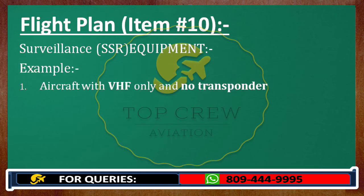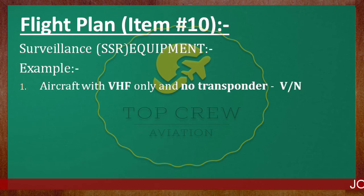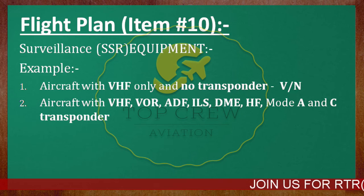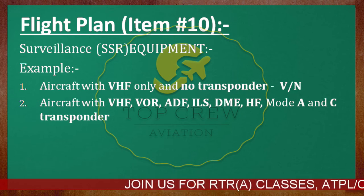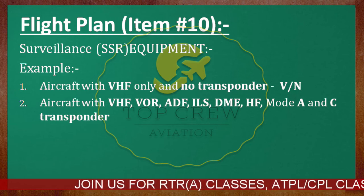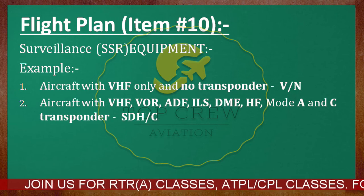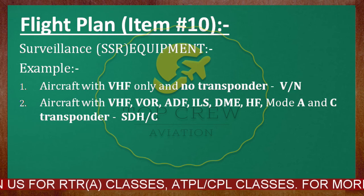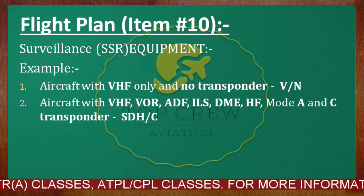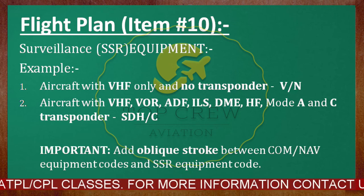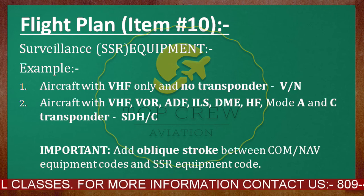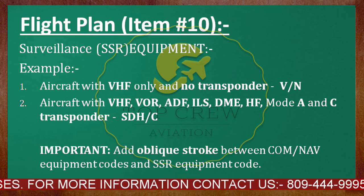For example, an aircraft with VHF only and no transponder — insert V oblique N. An aircraft with VHF, VOR, ADF, ILS, DME, HF, and Mode A and C transponder — insert S, D, H oblique C, that is for C transponder. Remember to add the oblique stroke between communication/navigation equipment codes and SSR equipment codes.